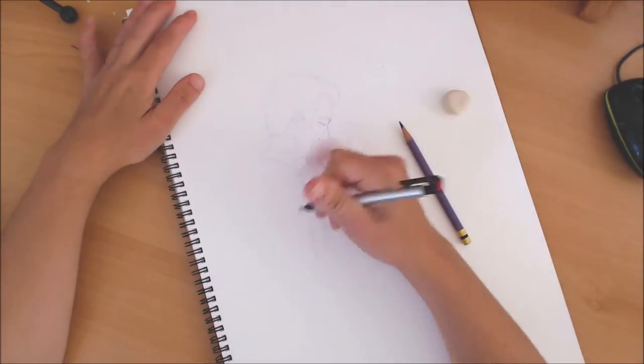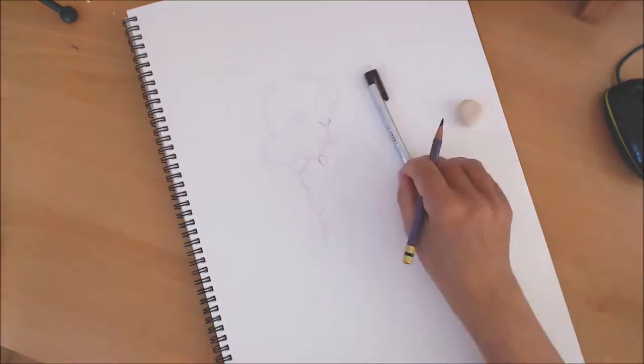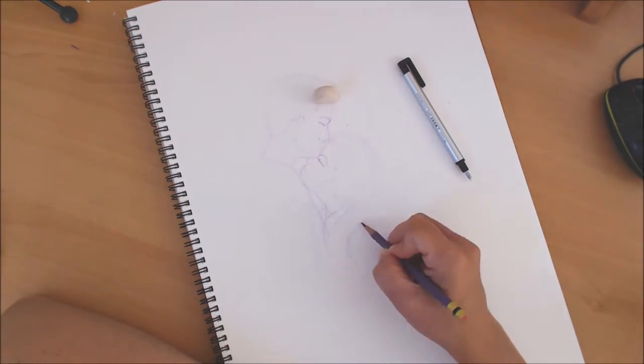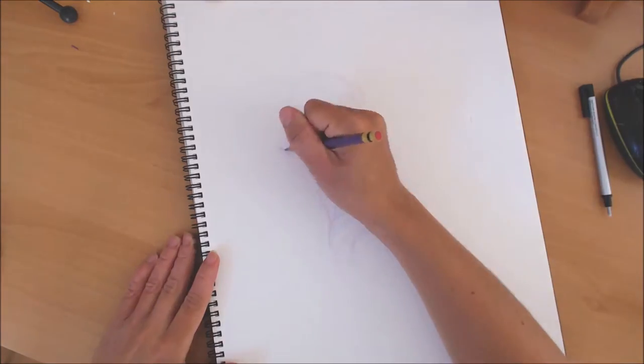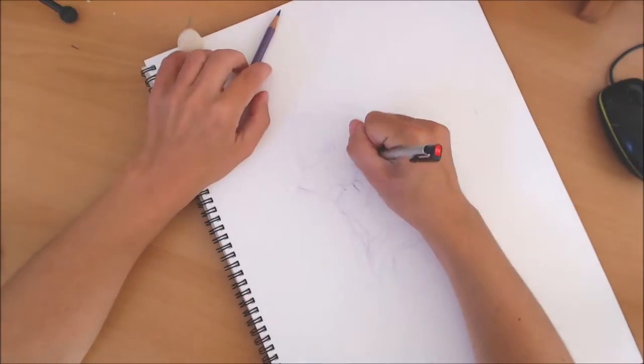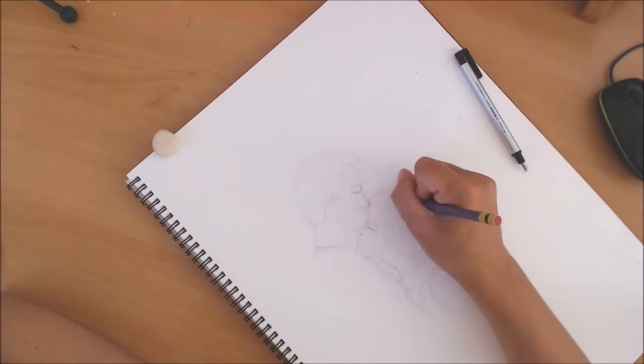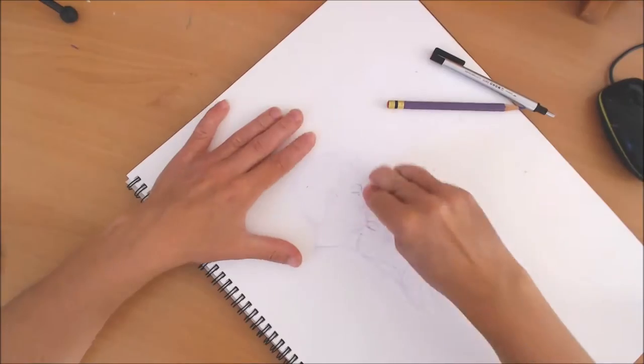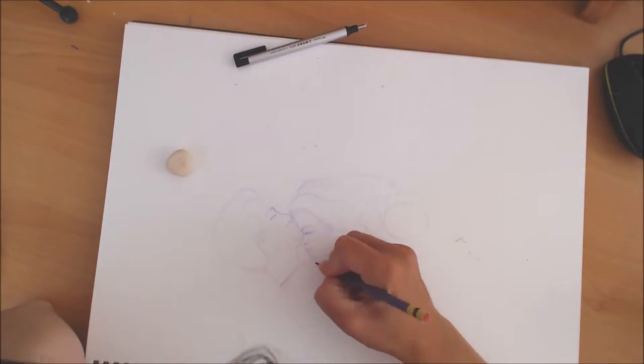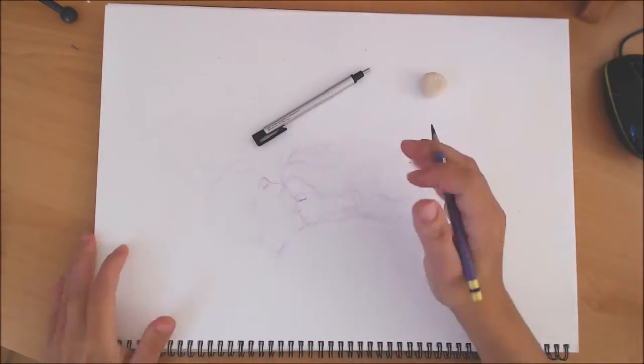You can also use circles for the tip of the nose and for the bottom of the ears, the earlobes. So when you learn to break down into shapes and draw the shapes, your drawing will improve. And when your brain stops seeing eyes and ears and noses but circles and abstract shapes, then your drawing will improve.